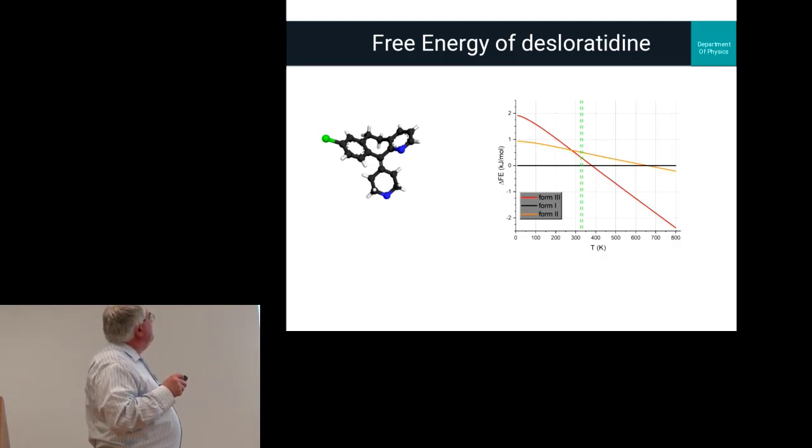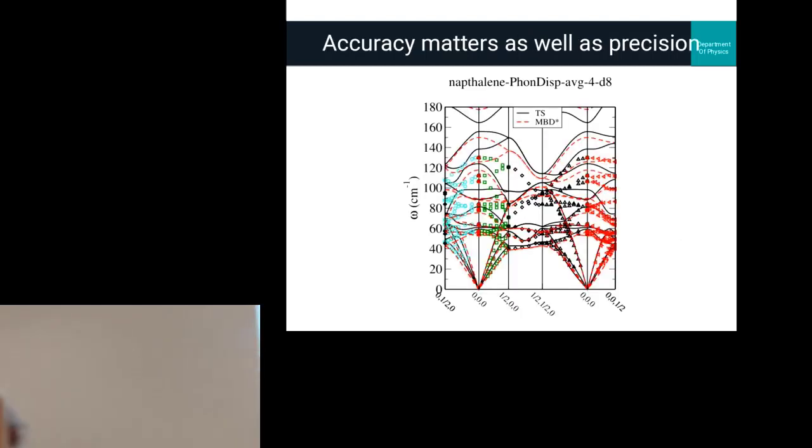But we have pushed this enough to do the free energy. This is desloratadine. We can compare the free energies of polymorphs. Form one is renormalized to zero, and form three, there should be a phase transition to form three somewhere about 360 Kelvin. We can calculate the free energies to the kilojoule per mole accuracy, to chemical accuracy, only by pushing this whole suite of convergence factors very hard. I really just skimmed over how we did it.